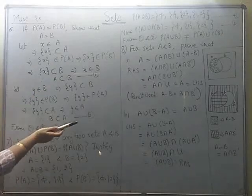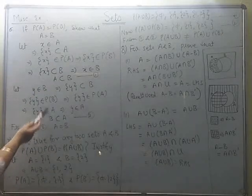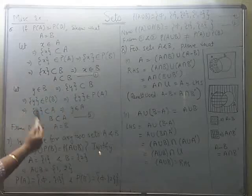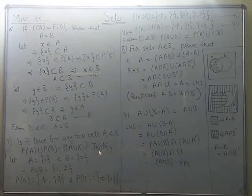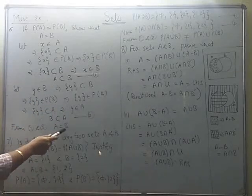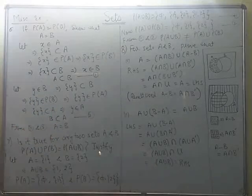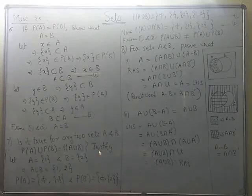So we started with y belonging to B and got y also belonging to A, meaning B is a subset of A. From steps 1 and 2, A is a subset of B and B is a subset of A, so they both have to be equal. Now see another one.